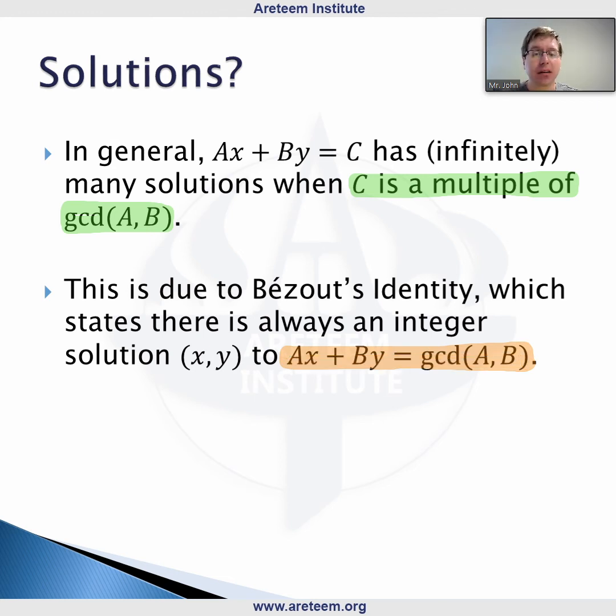This is called Bézout's identity or Bézout's lemma, which always states there's an integer solution to Ax plus By equals this GCD. Now we know when there are no solutions, and we've seen the general method. Let's look at one more example to hammer home how we solve these when C is a multiple of the GCD of A and B.